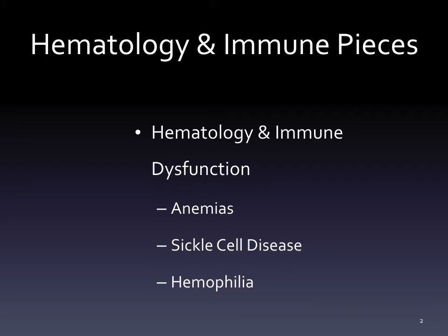For the hematology content, we'll be discussing very few items - it should be pretty straightforward. We'll cover some anemias including iron deficiency anemia, anemia in general, sickle cell disease as a review from block two content, and how to care for a child with sickle cell disease. We'll also be reviewing hemophilia types A and B.